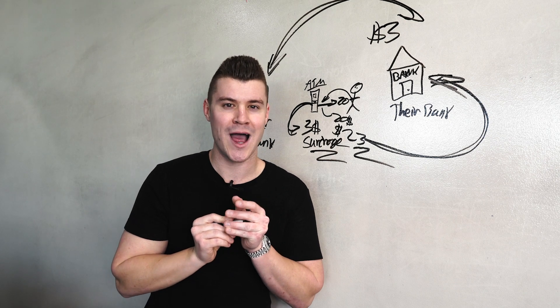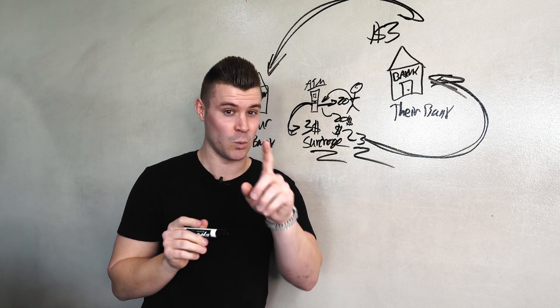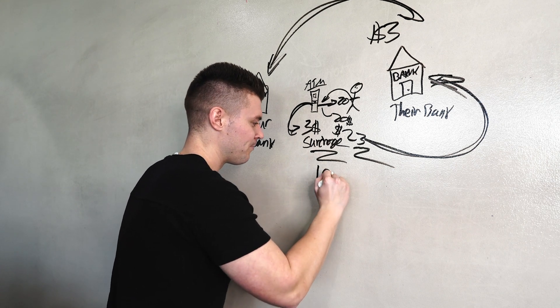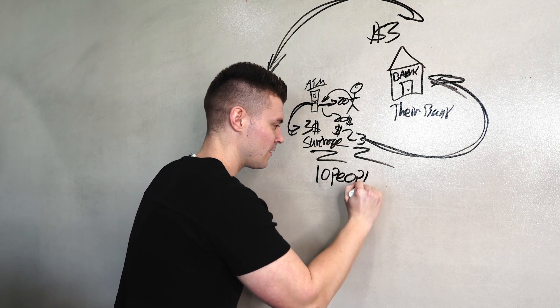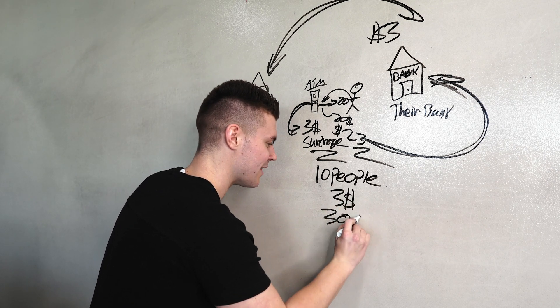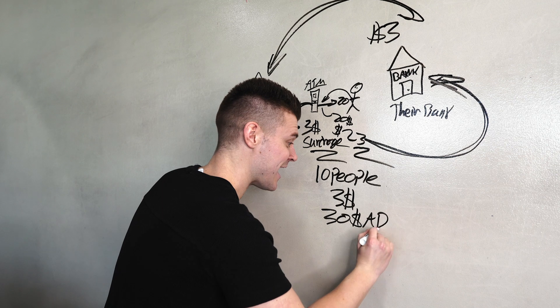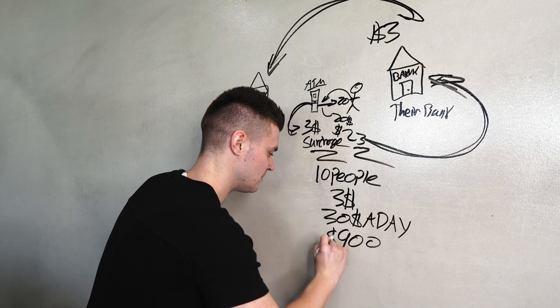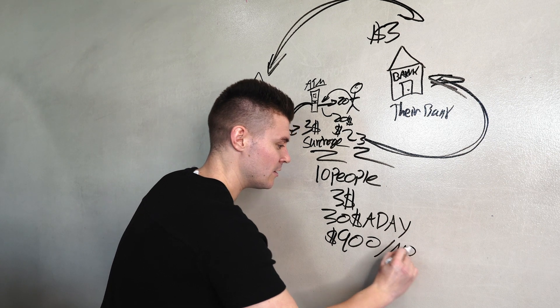Does that make sense? If it doesn't make sense, I'll run through it again for you guys. So this person comes to your ATM, wants to get $20. They use their debit card or credit card to get $20. The ATM machine charges them $23 because it's a $3 surcharge. So their bank gets charged $23. That $3 then comes over to your bank.